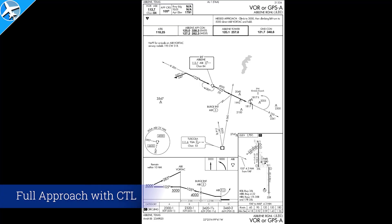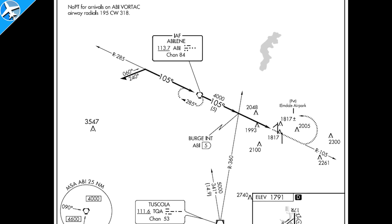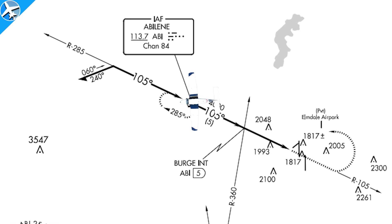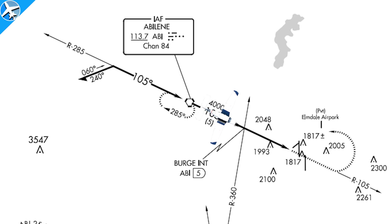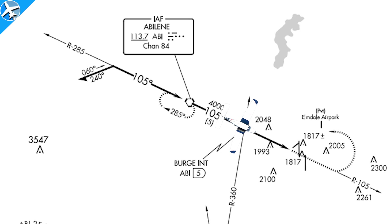This next approach will sound a little different — it's a full approach but we will circle to land. When not in radar coverage, a full approach has to be conducted: the aircraft is flown to the initial approach fix, flown outbound, procedure turn completed, then intercept the final approach course inbound. The clearance will sound different from the ones heard previously. We'll be cleared to a fix, cleared for the approach, and told which direction to circle. The aircraft can only be given circling directions when there is an operating control tower.